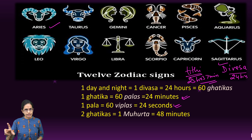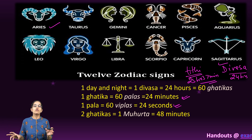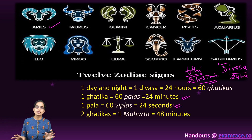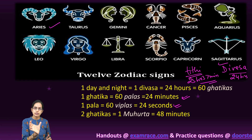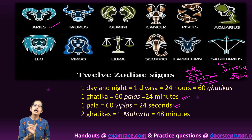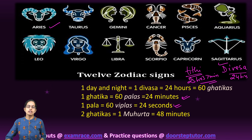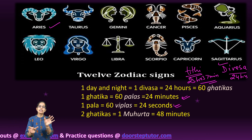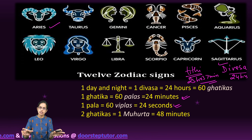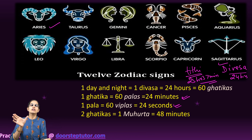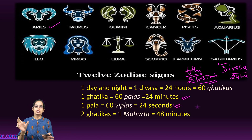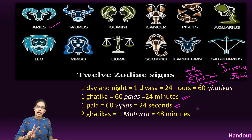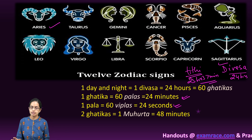Two Ghatikas together form a Muhurat, which is considered an auspicious period. One Muhurat equals 48 minutes. Muhurats can alternate between auspicious and inauspicious, each lasting 48 minutes.